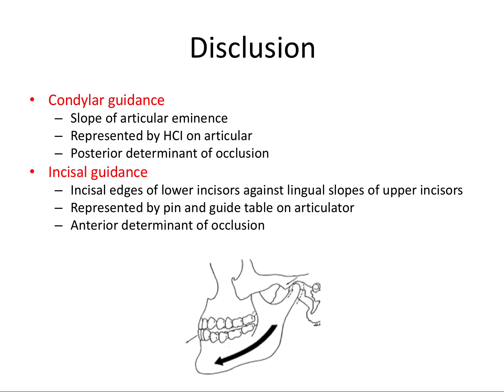If occlusion is all about teeth functioning together, disclusion is where the teeth are separating from one another in function — in order to protect the teeth from wear, excessive occlusal force, and potential trauma. When the patient is protruding the lower jaw forward, there is one posterior determinant of occlusion and one anterior determinant of occlusion, and these two concepts are extremely important for the board exam.